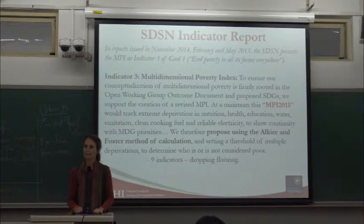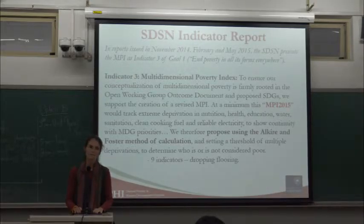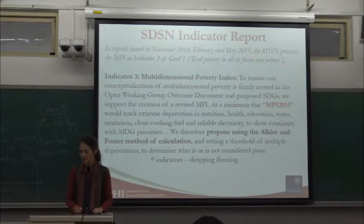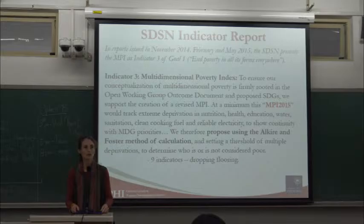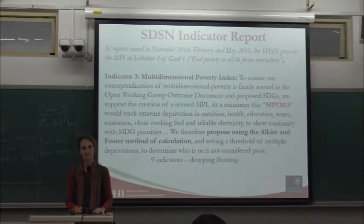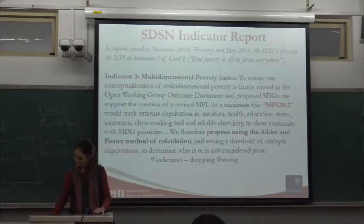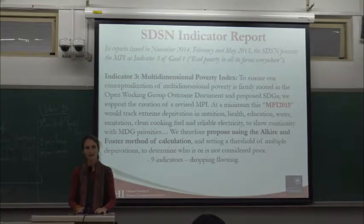Jeff Sachs and the Sustainable Development Solutions Network were tasked with proposing indicators to the UN Secretary General. In all of their reports, they commended the use of a global MPI to measure 1.2, feeling that having a comparable measure and trying to reduce it by half is more effective than trying to reduce by half national measures with widely disparate definitions. They suggested using the global MPI but dropping the flooring indicator, using 9 of the 10 current indicators.